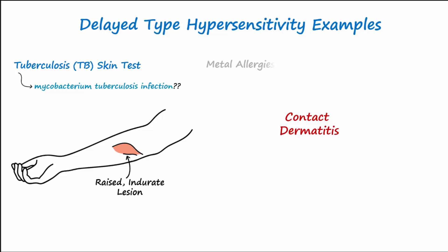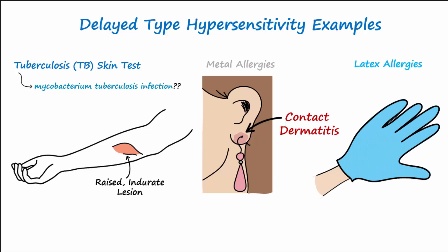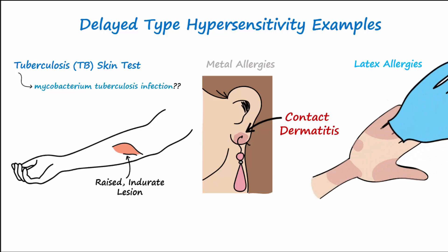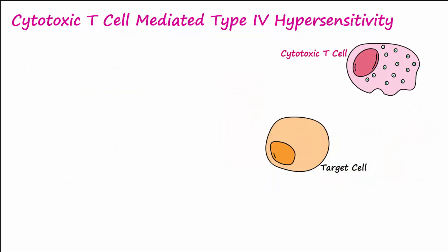Other important type 4 hypersensitivity reactions include contact dermatitis resulting from metal allergies, such as wearing nickel jewelry, as well as contact dermatitis in susceptible individuals after exposure to latex.